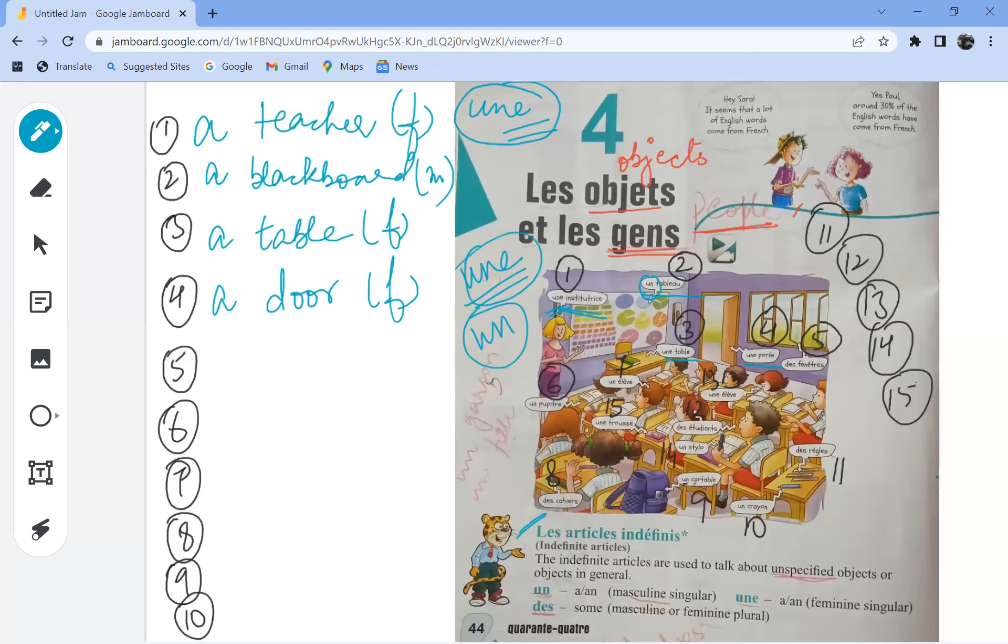Number five, des fenêtres. Here des is written, which is plural. Fenêtre is the French word for window. Since des is written which means plural, I'll tell you what the gender of this noun is, it is une. So a window, feminine.